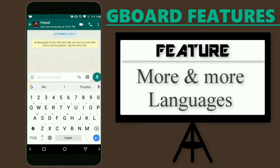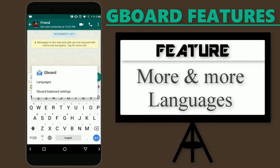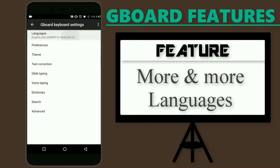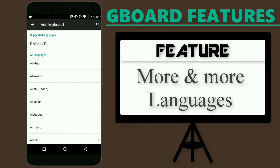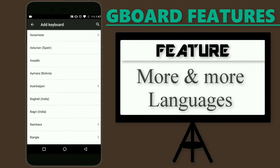Since I have mentioned the language change key, let me tell you that you can switch between languages while typing just by tapping on the language change icon. You can add as many languages as you need. To add a new language, go to settings, select the first option which is 'Language,' then tap on 'Add keyboard' and select the language for which you need a keyboard.